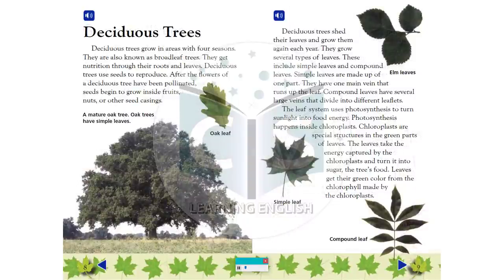Deciduous Trees: Deciduous trees grow in areas with four seasons. They are also known as broadleaf trees. They get nutrition through their roots and leaves. Deciduous trees use seeds to reproduce. After the flowers of a deciduous tree have been pollinated, seeds begin to grow inside fruits, nuts, or other seed casings.